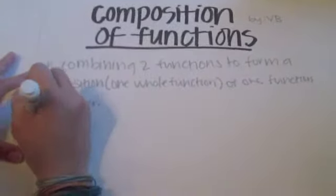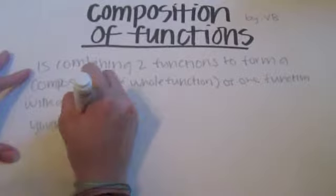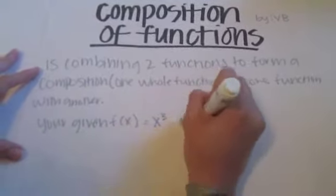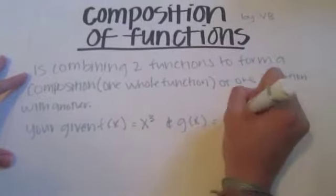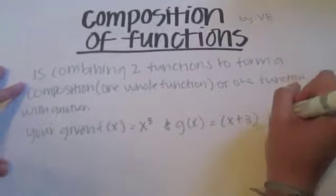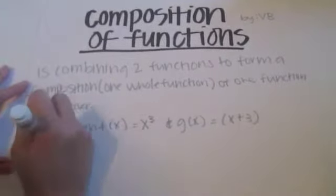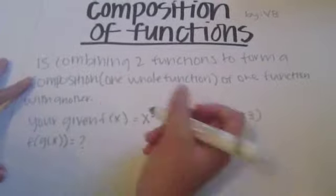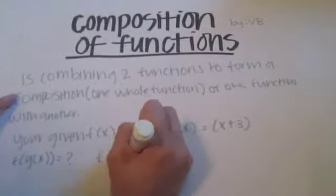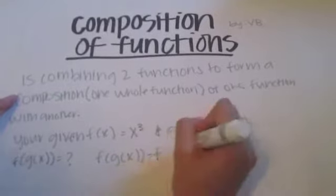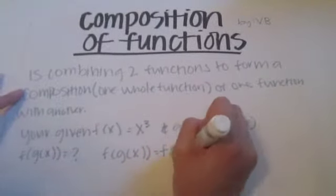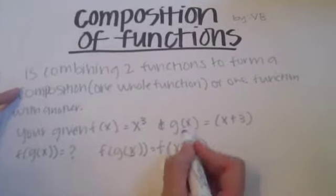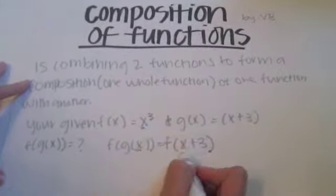For example, if you're given f of x equals x cubed and g of x equals x plus three, you're trying to find f of g of x, which is your unknown. Basically what you do is write f of g of x equals f of x plus three.